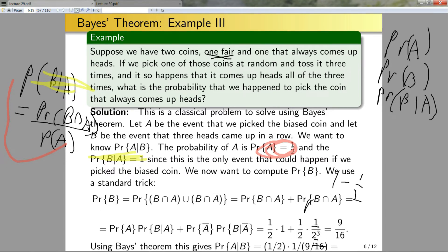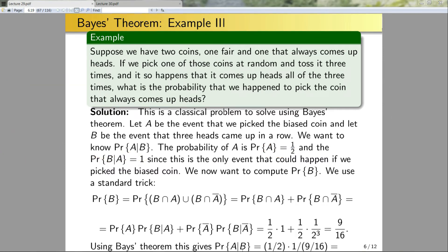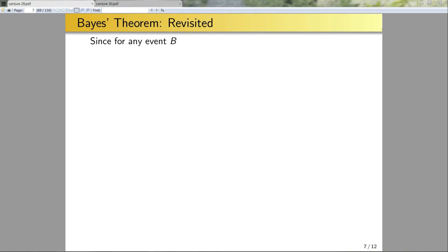So now I can use Bayes' theorem by putting all of this together. The probability of A given B is the probability of A — one-half — times the probability of B given A — one — all divided by the probability of B, which is nine-sixteenths. This is an example where Bayes' theorem makes my life a little bit easier.